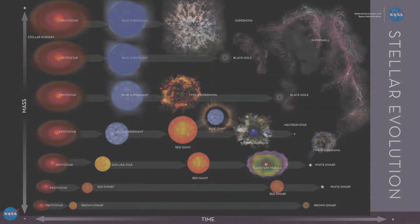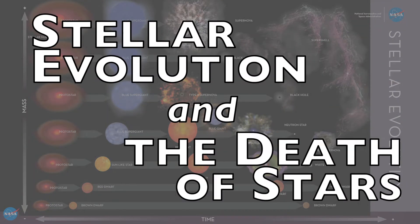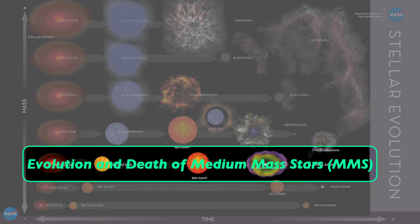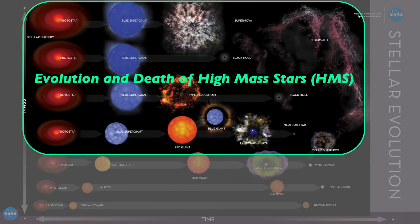So this unit is not only about stellar evolution, but also about the inevitable death of stars. We'll begin by learning about the evolutionary stages and the eventual deaths of low mass stars. Then we'll move on to talk about the evolution and death of medium mass stars, like our own sun, and the evolution and death of high mass stars.